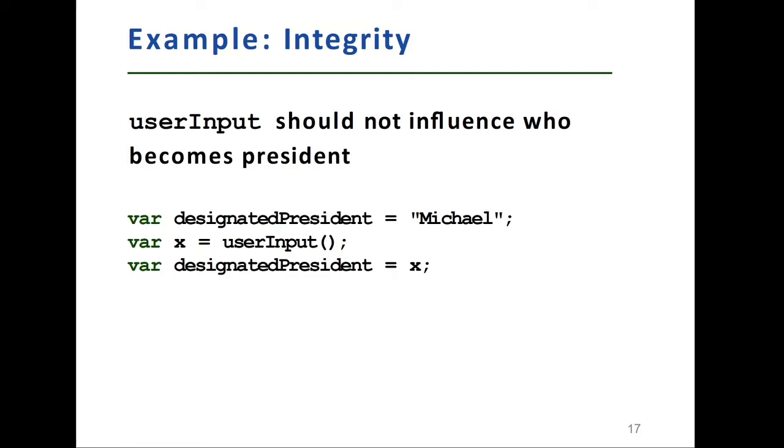And line 3, actually, because of this assignment, user input propagates to our important variable, which is designated president. Here we have an integrity violation. Low integrity information propagates on line 3 to high integrity variable.